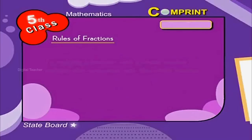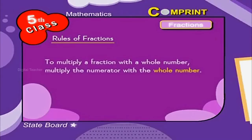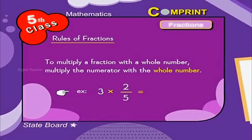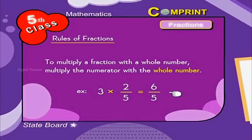To multiply a fraction by a whole number, multiply the numerator with the whole number. For example, 3 into 2 by 5 is equal to 6 by 5, that is 3 twos are 6, giving 6 by 5.